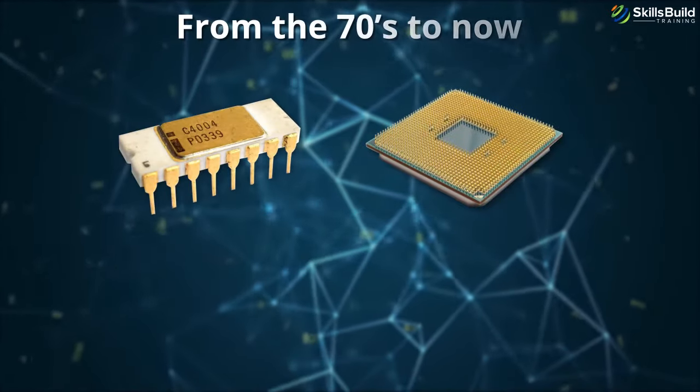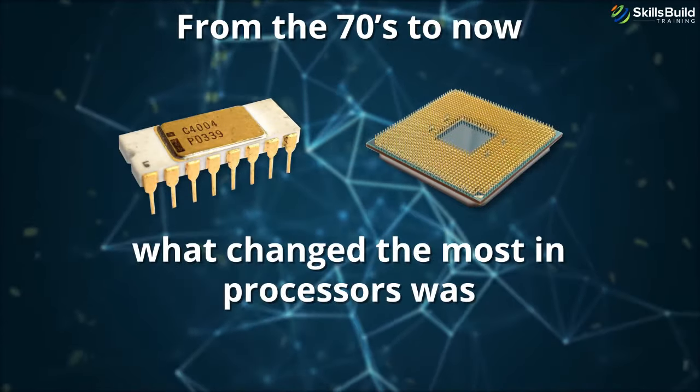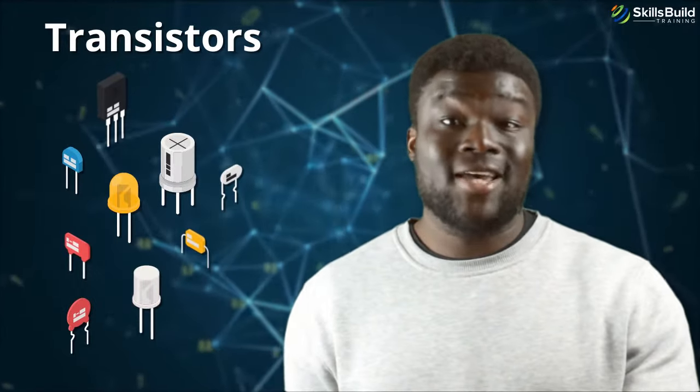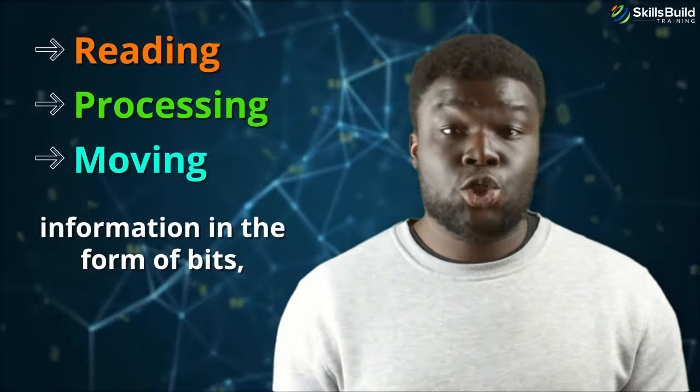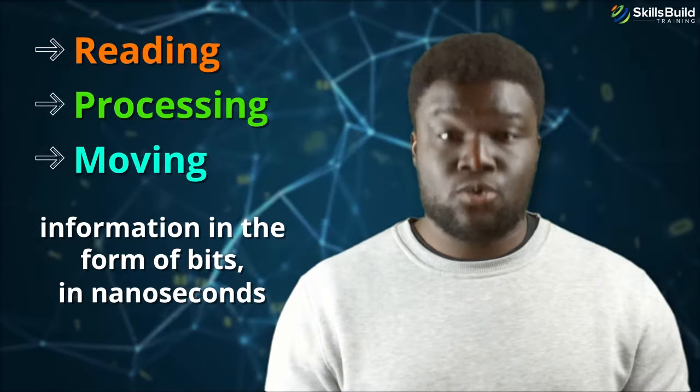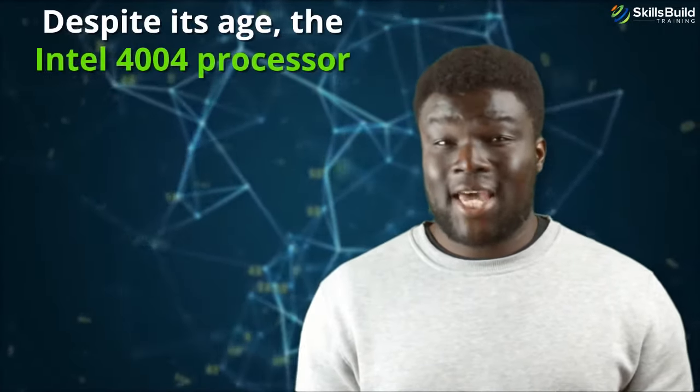From the 70s to now, what changed the most in processors was speed. This was made possible by manufacturers' ability to introduce more and more transistors into the same space. However, what a processor does remains the same: reading, processing, and moving information in the form of bits in nanoseconds.